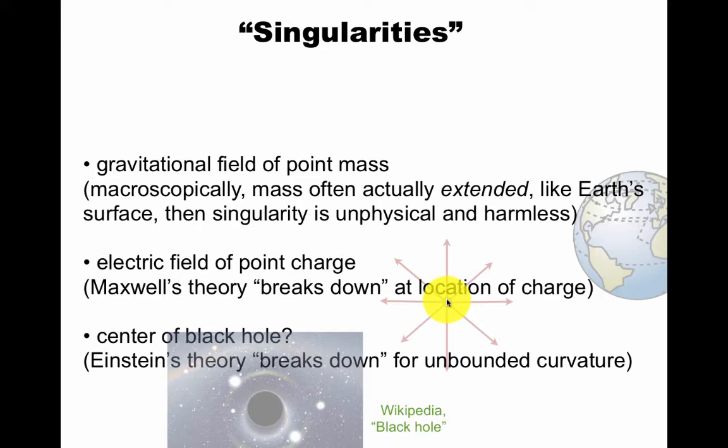At the center of a black hole, Einstein's theory is known to break down because the curvature becomes unbounded. So at the center of the black hole, not the event horizon but the center, there could be some problem. And this is not really understood how to deal with, unlike these two problems. So here we're going to mostly focus on these two and then maybe comment on something like this at the end.